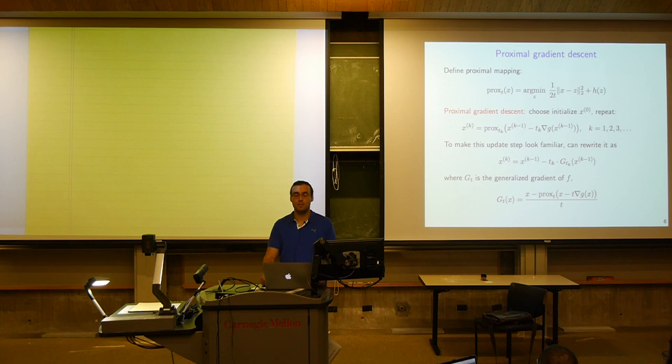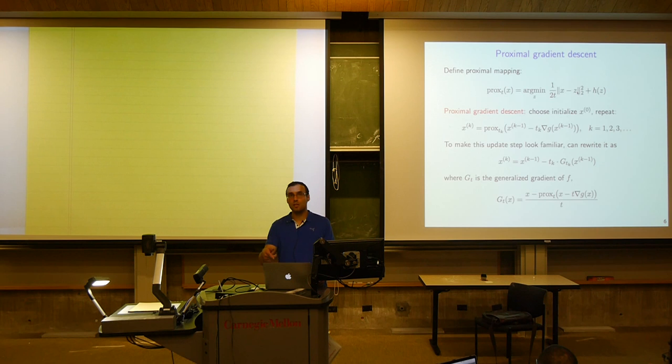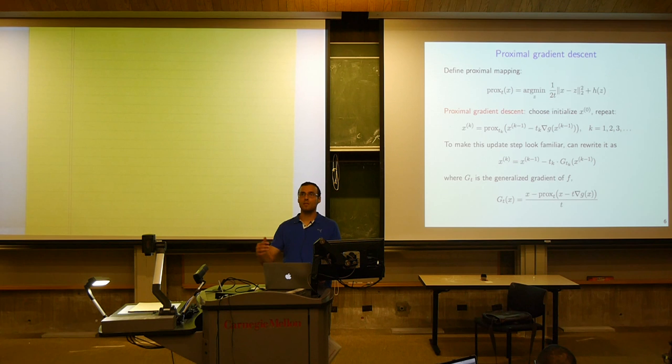For example, for the one-norm — if h was the one-norm, as we already proved several lectures ago — the answer was just soft threshold the elements of x by a certain amount. If h is the one-norm, it would be by the amount t. So move every component of x closer to 0 by the amount t, and don't ever move it through 0. Set it equal to 0 if it's already within the interval minus t to t.